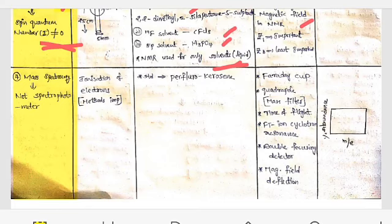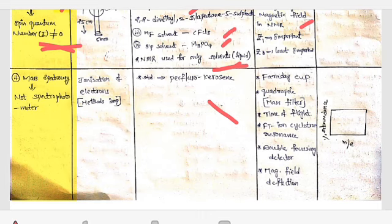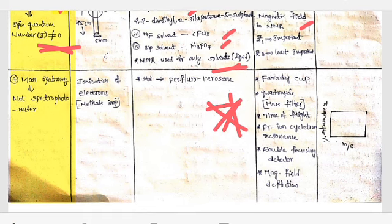The standard used in mass spectroscopy is perfluorokerosene. The detectors used in mass spectroscopy are one of the important areas to focus on. Detectors include Faraday cup, quadrupole (also called mass filter), time-of-flight, FT-ion cyclotron resonance, double focusing detector, and magnetic field detector. The graph is drawn between mass per charge and percentage absorbance.